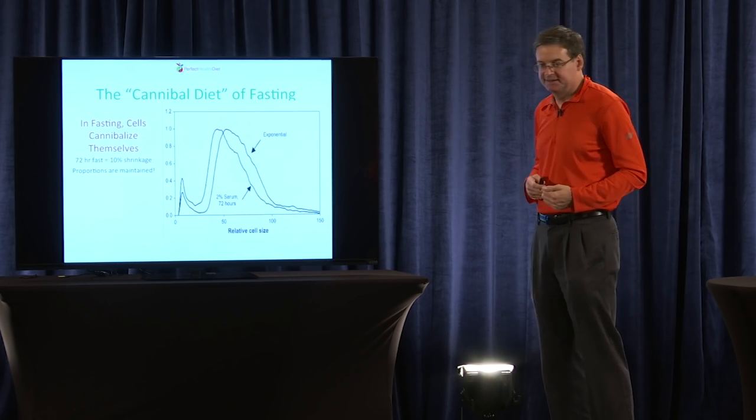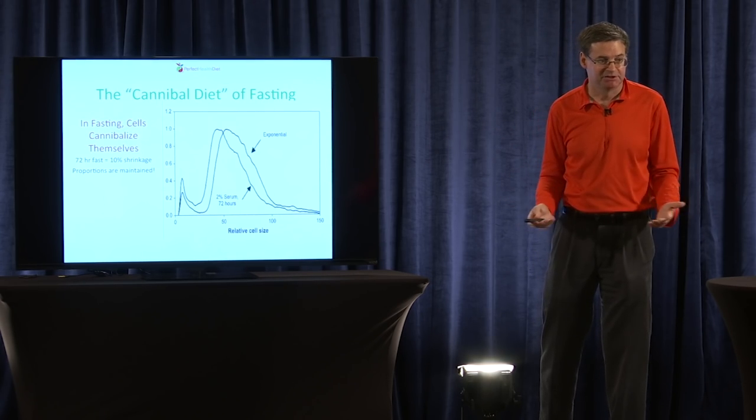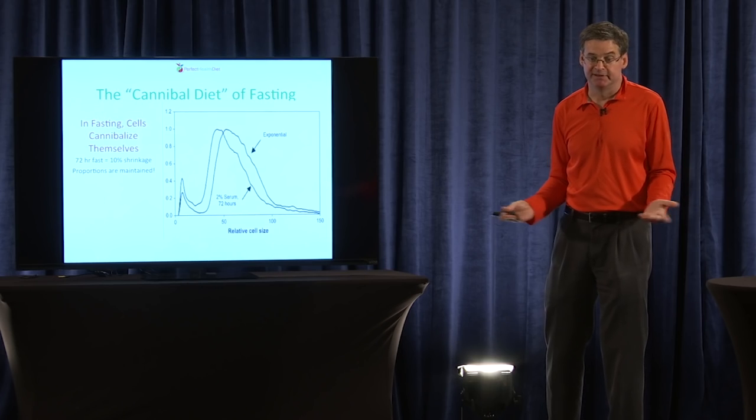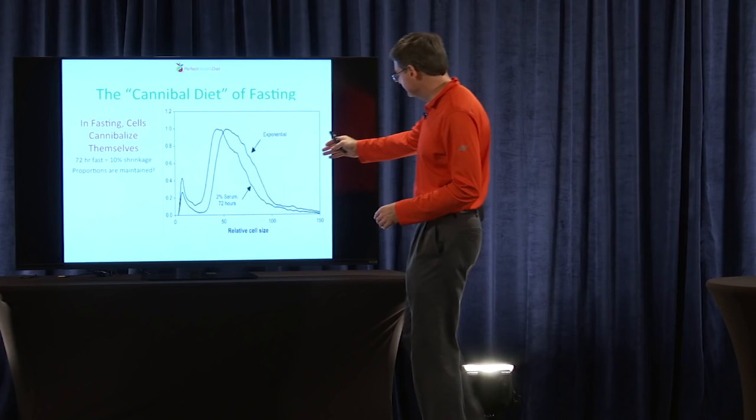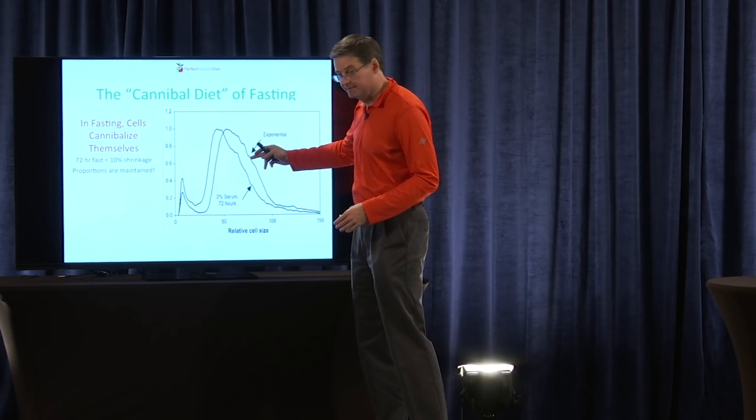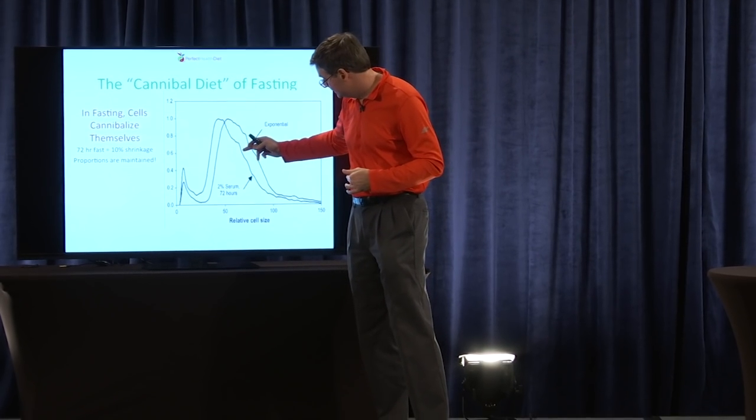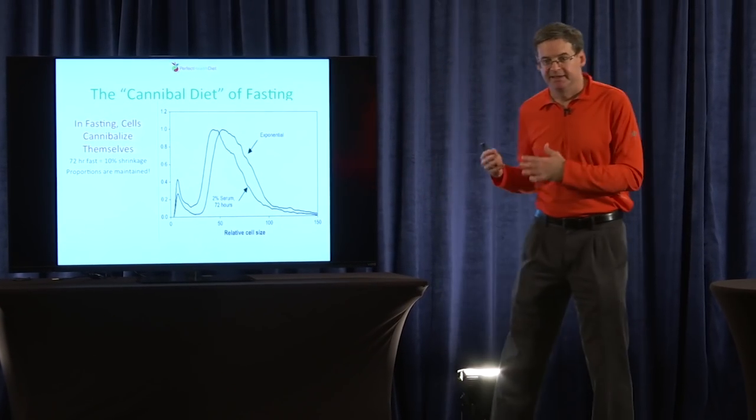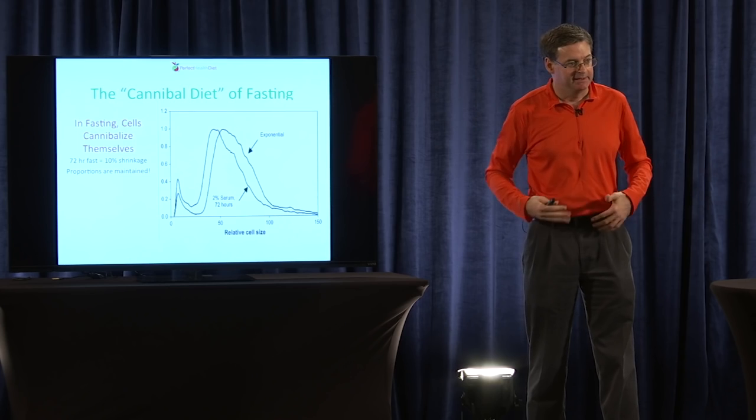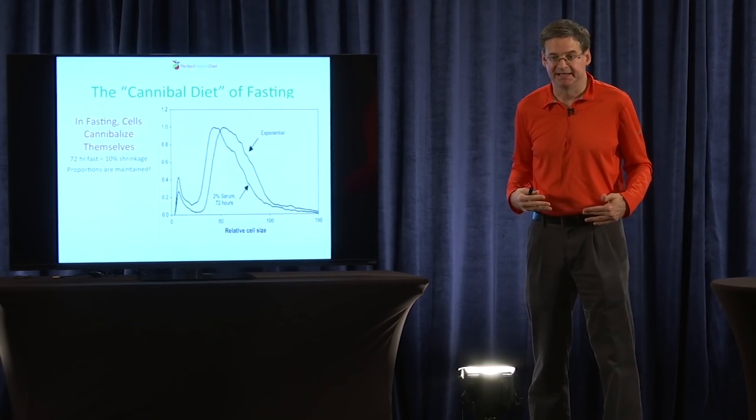Well, we can actually see this in cells. If you put cells in culture and you starve them for three days, what happens? The cells just shrink in size. So all of these cells, they cannibalize themselves and they shrink in size, but they're still fully functional. So everything the larger cell can do, the smaller cell can do. And that's how we maintain full functionality.